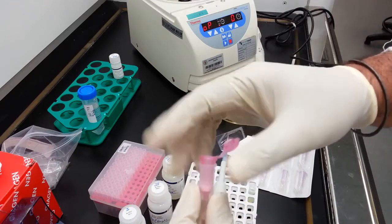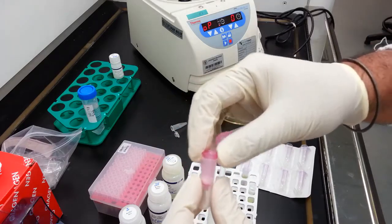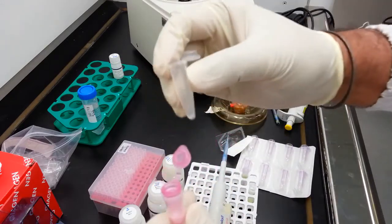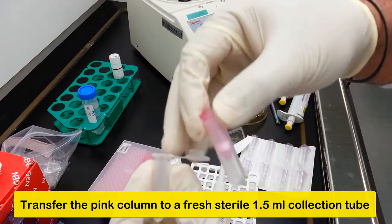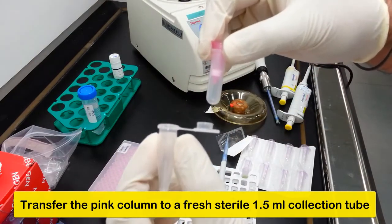The next step involves recovery of the RNA. In order to do this, use a fresh sterile centrifuge tube. In this case, it's a 1.5 ml eppendorf tube.